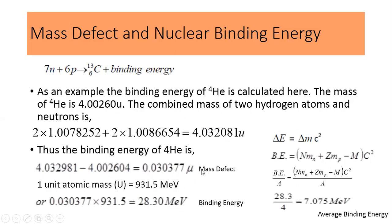The actual mass is less than the calculated mass. According to the law of conservation of mass and energy, mass and energy cannot be destroyed, so this mass is converted into energy using Einstein's equation E = mc². For convenience, we use the conversion: 1 u = 931.5 MeV (mega electron volts). So by multiplying the mass defect by 931.5, you can directly convert the mass into energy without needing to apply the full Einstein equation each time.